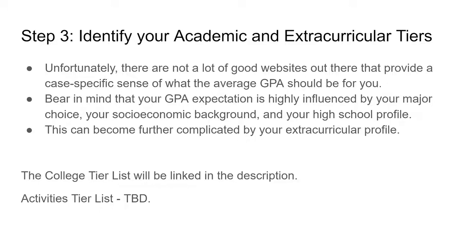Step three: identify your academic and extracurricular tiers. Be realistic — it doesn't make sense to create a college list as a ninth or tenth grader because you haven't shaped out enough yet. I give a breakdown of academic tiers in my research university tier list video. Extracurricular tiers are much harder to explain and I have a future video planned. Knowing where you stand — are you a really competitive student, top five percent, top one percent? Are your extracurriculars super impressive and unique, or are they particularly vanilla?